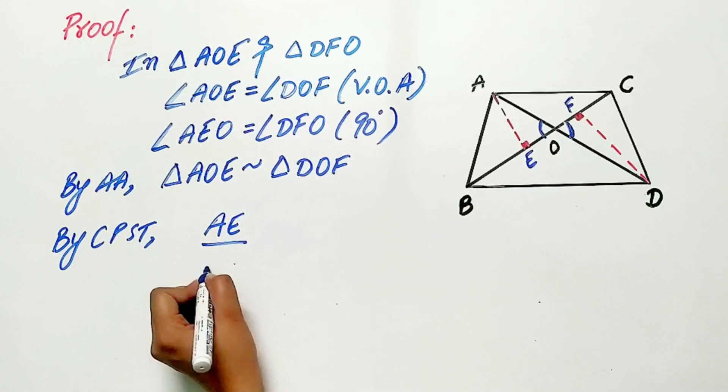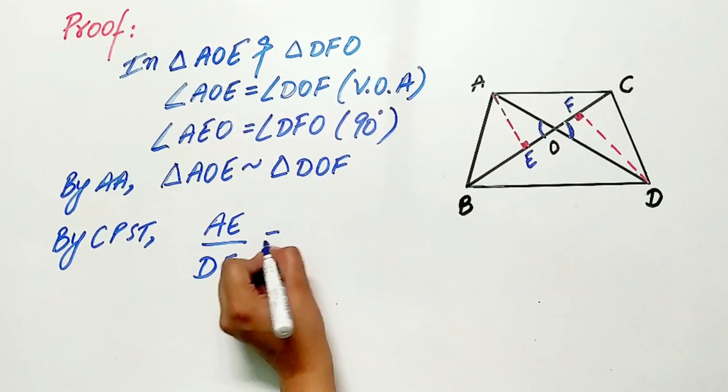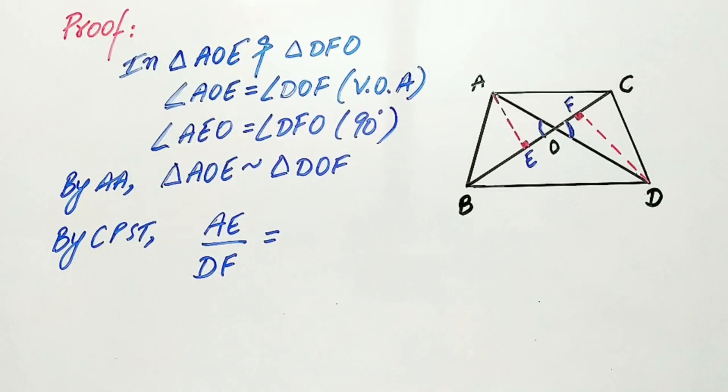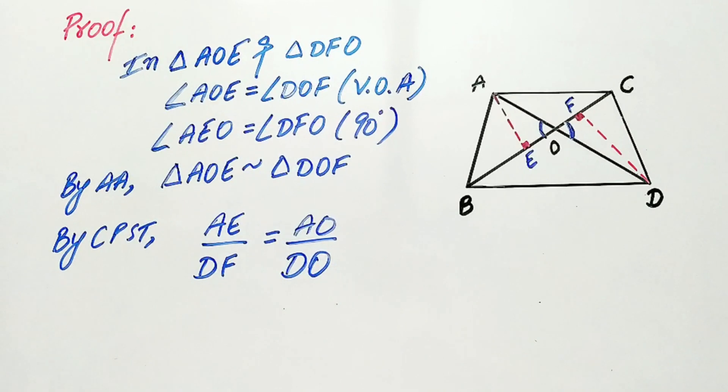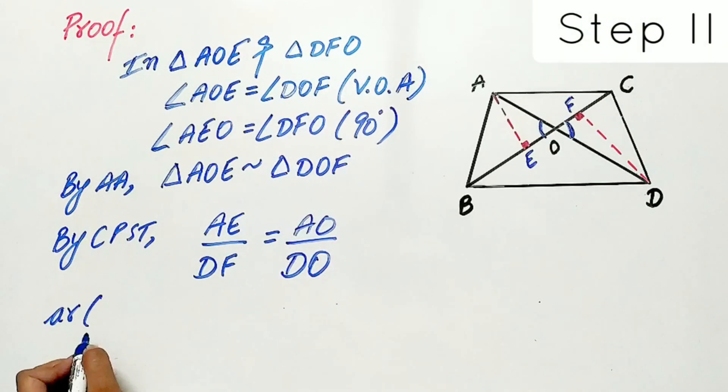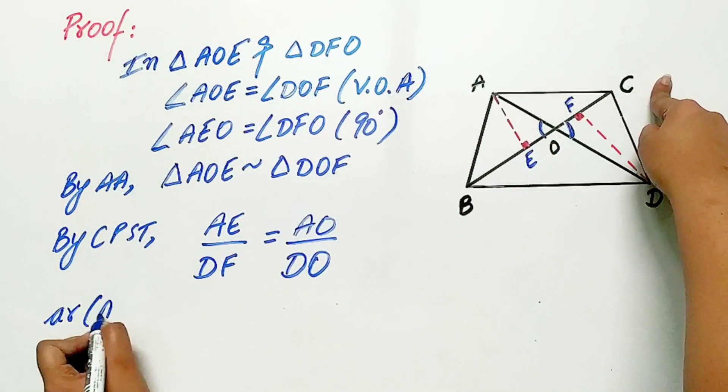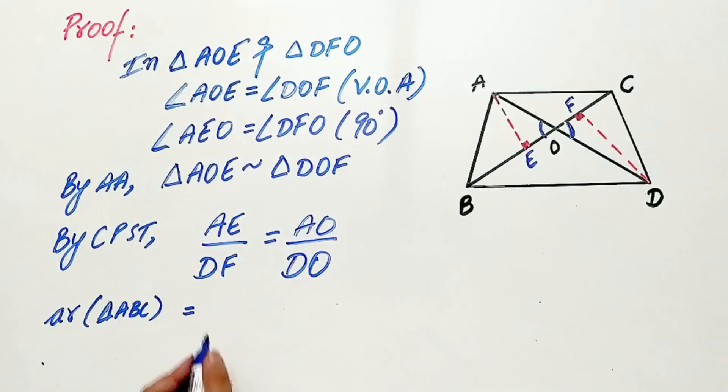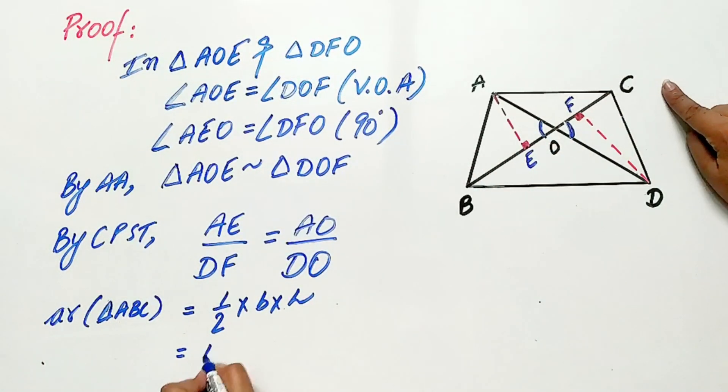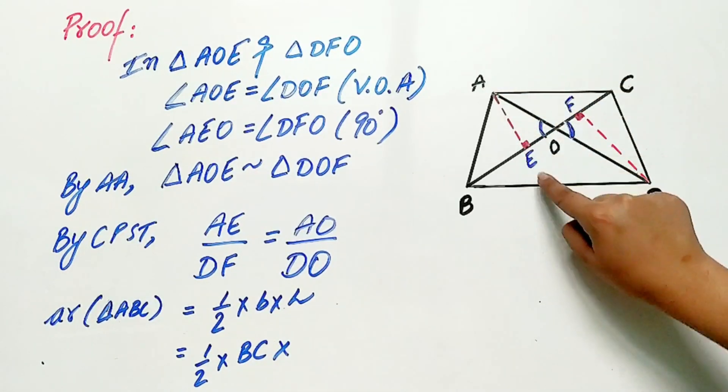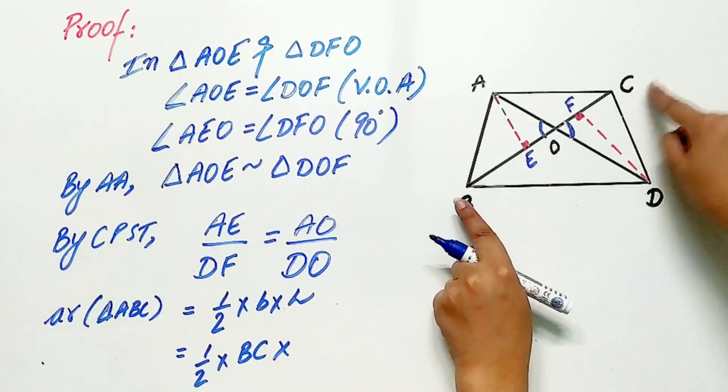Let's move to step 2. Area of triangle ABC is equal to half base into height, where base is BC and height is AE in triangle ABC.